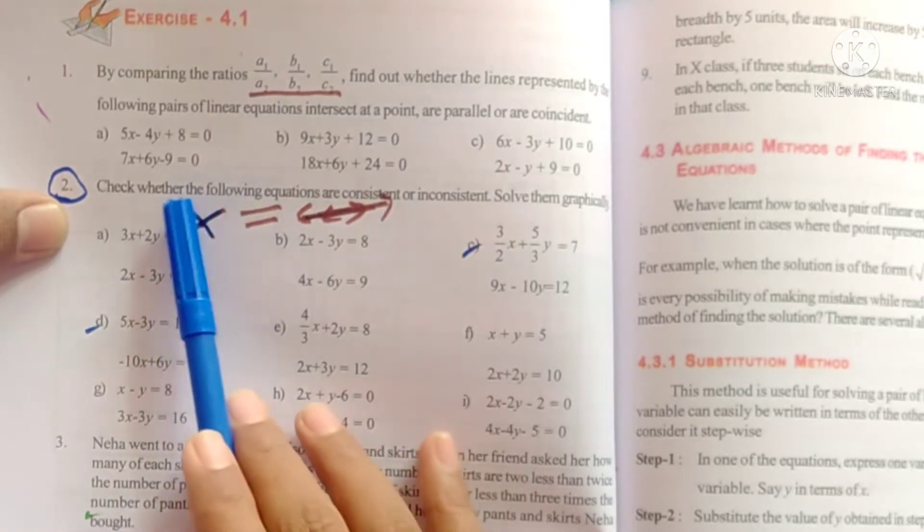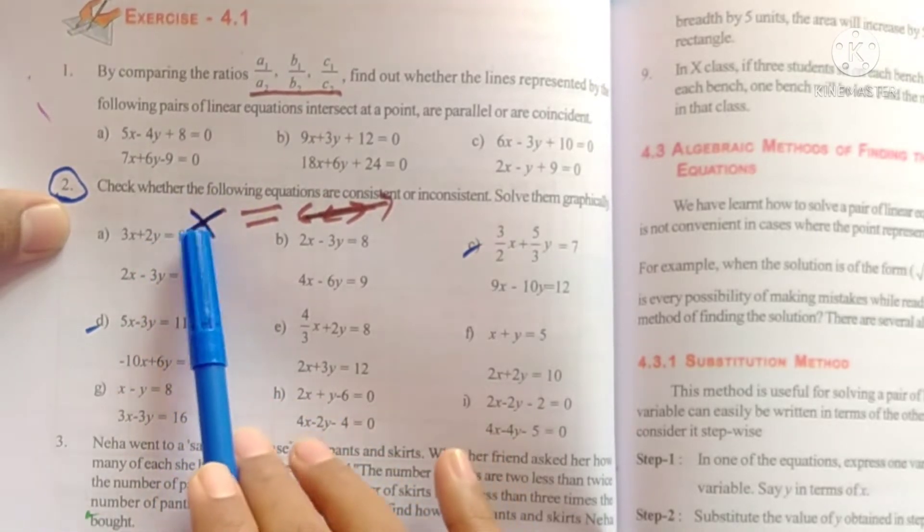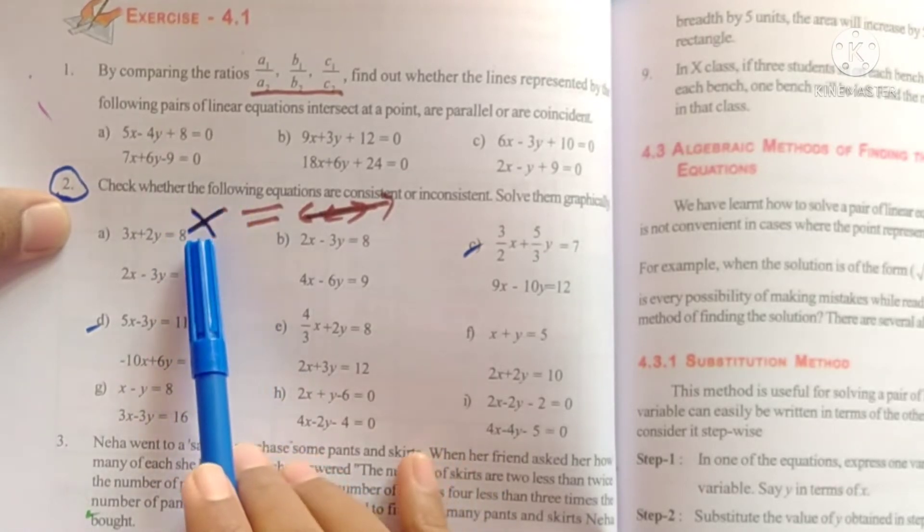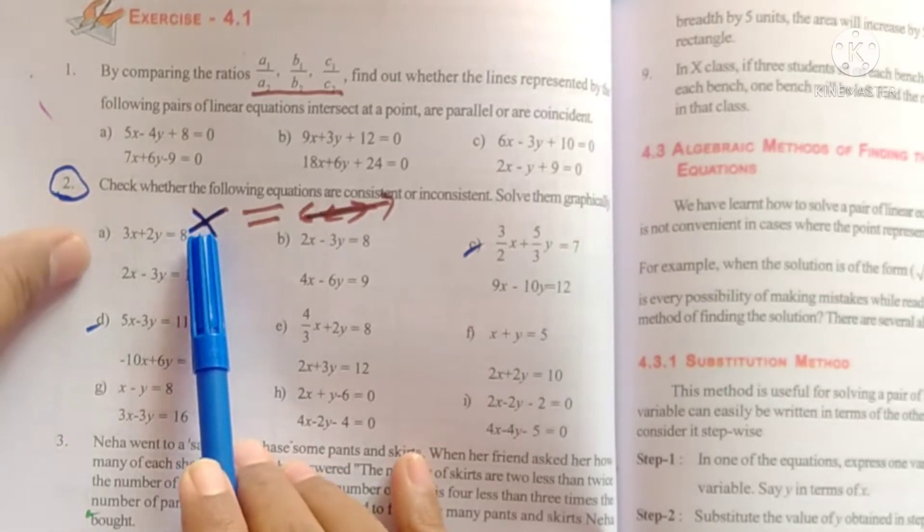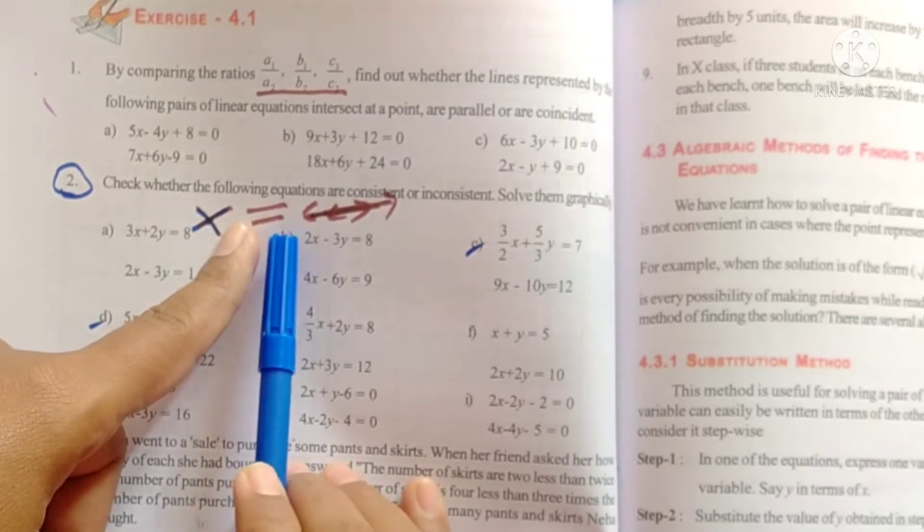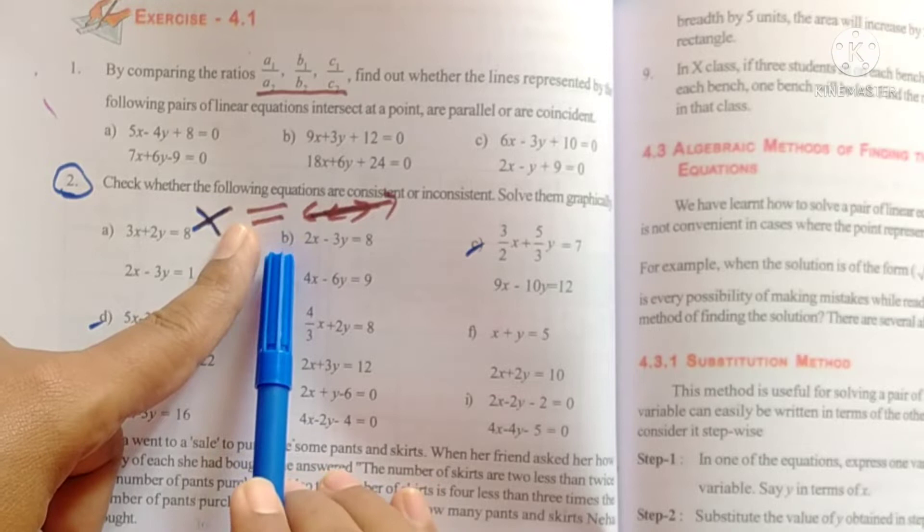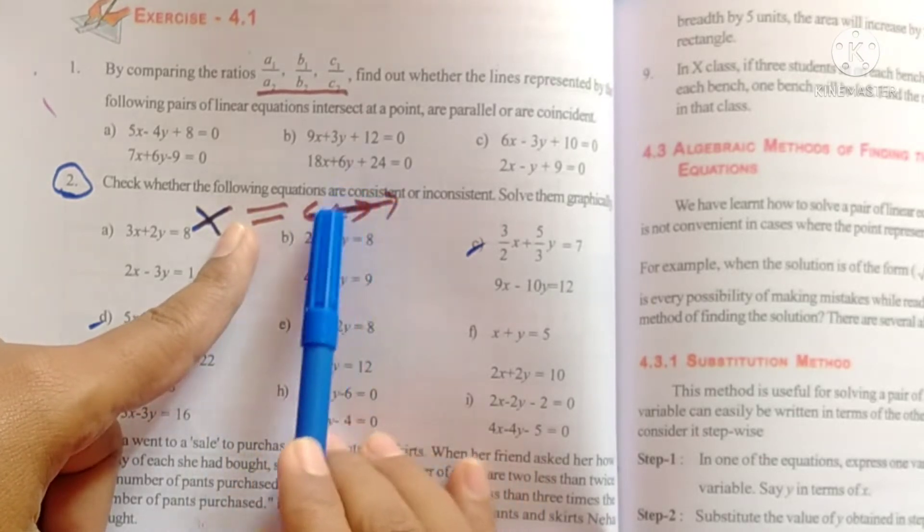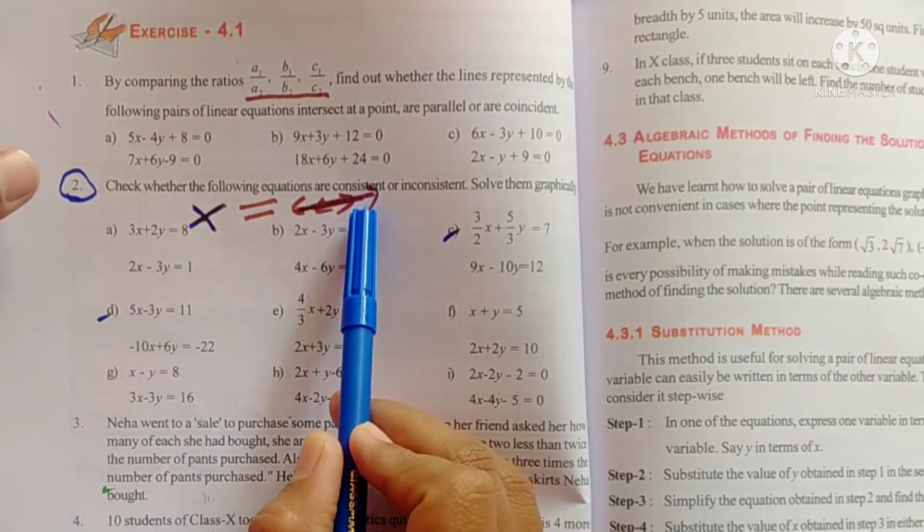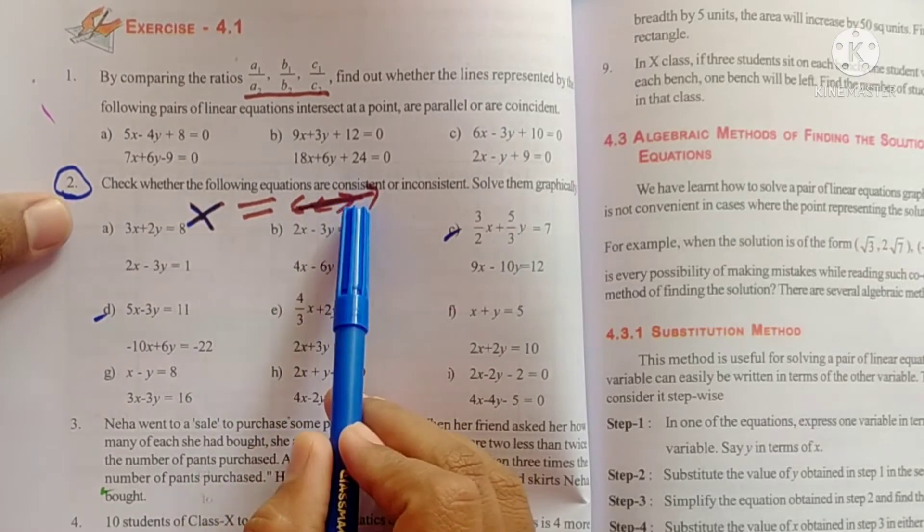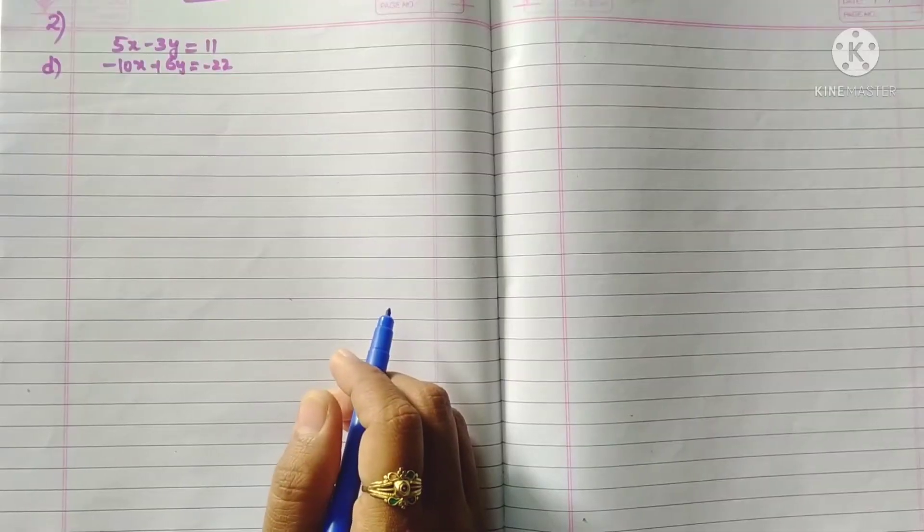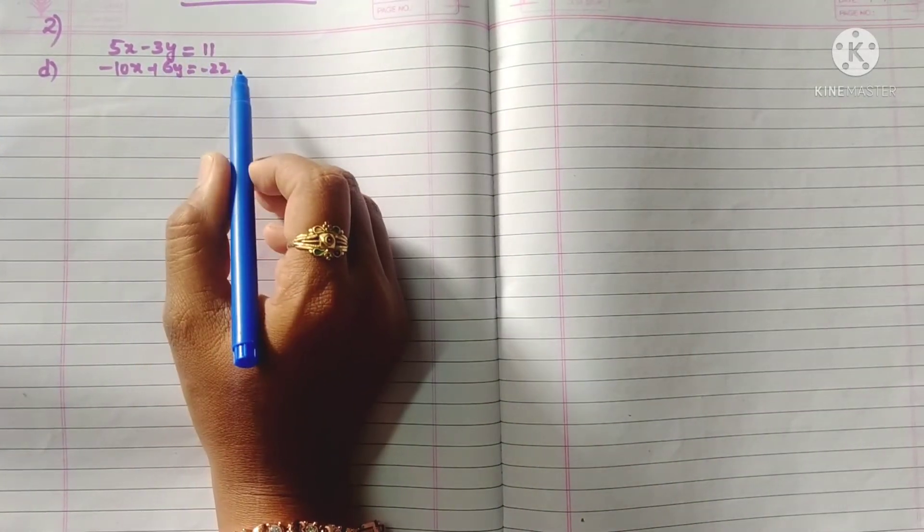Two equations are consistent if they are intersecting lines. That means if there is a solution, they are consistent. Inconsistent means if they are parallel, there are no common points, so there is no solution and they are inconsistent. If two lines are coincident, then they have many solutions and are consistent.